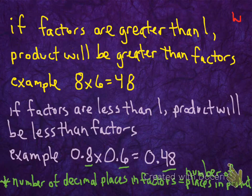Here are a few facts we need to know regarding estimating. If the factors are greater than 1, the product will be greater than the factors. For example, 8 times 6 is 48. 8 is a factor, 6 is a factor, 48 is our product. Factor times factor equals product.